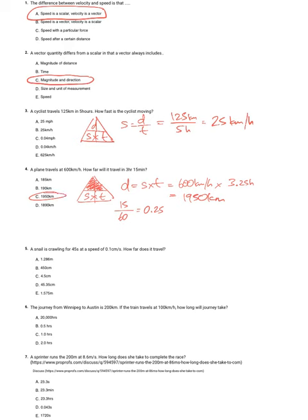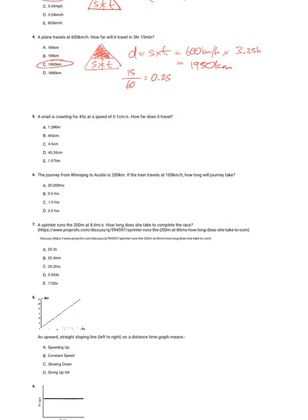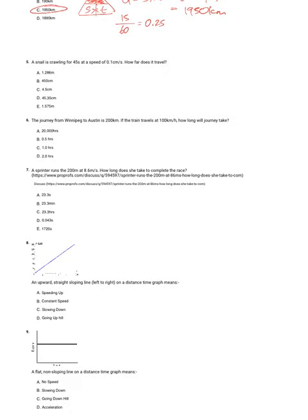So 600 times by 3.25 gives you 1950 kilometers. I forgot to circle this here, 25 kilometers an hour. Question 5: A snail is crawling at a speed of 0.1 centimeters per second for 45 seconds. How far does it travel?